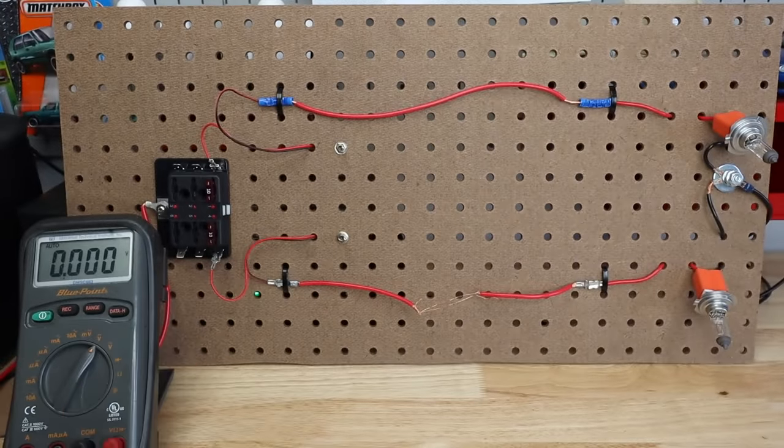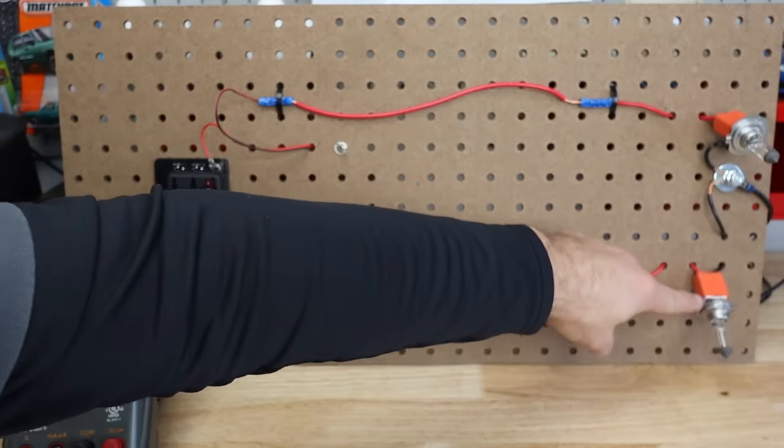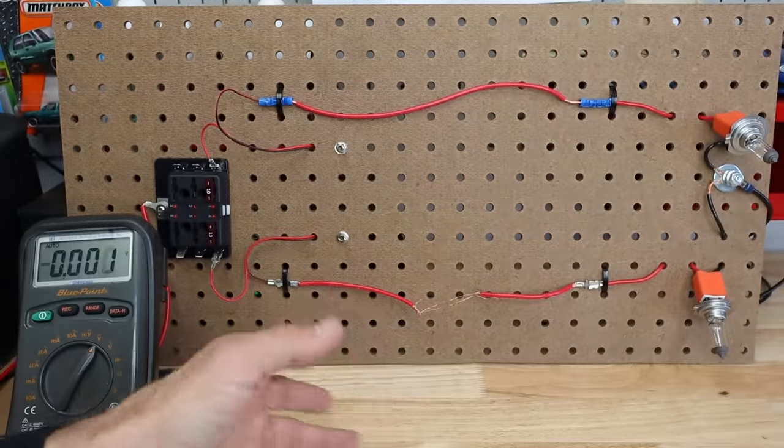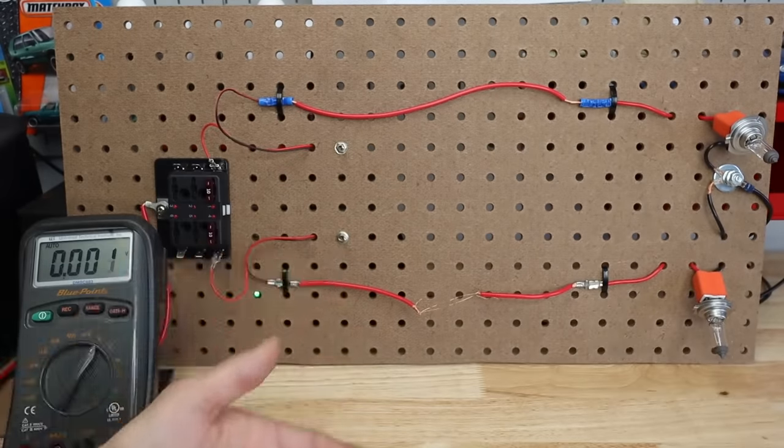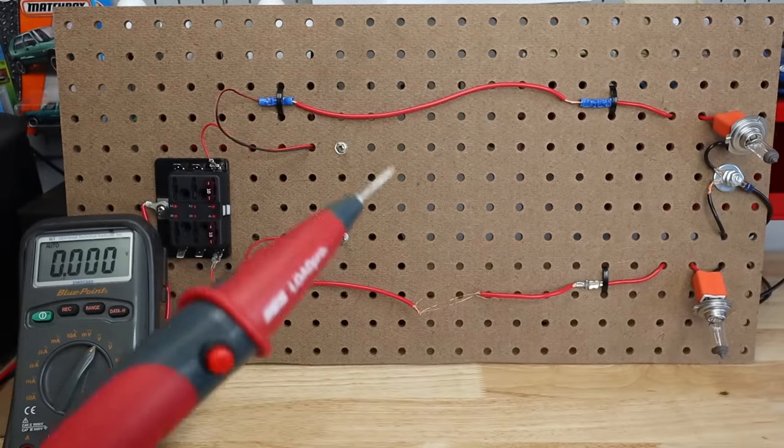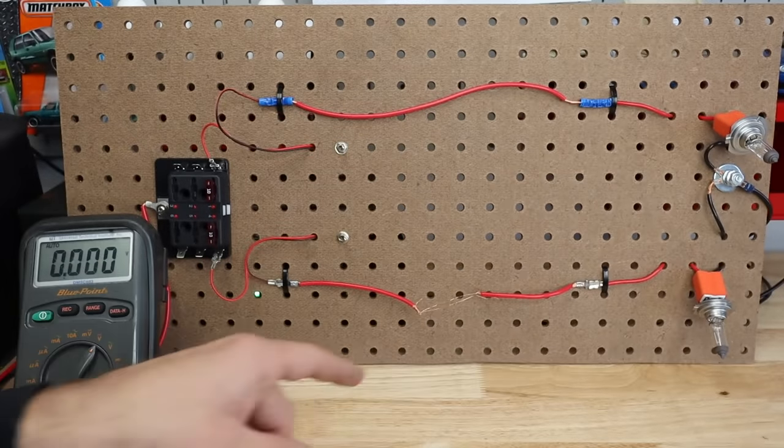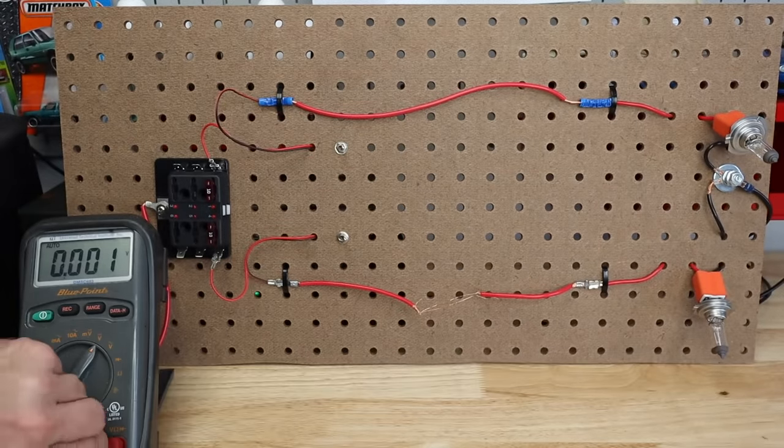This is interesting because let's say we were trying to check the volt drop over here - we would have to get behind the bulb and back probe it. Remember we have to have the circuit on in order to do this test. Something like this actually replaces the load in the circuit and forces the drop.